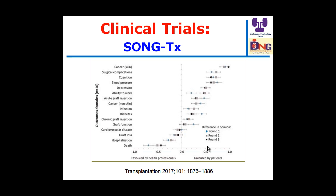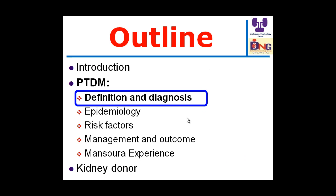This is one of the important points for clinical trials in renal transplantation. These are the most important outcome domains, either from health professionals' perspectives or from patients' perspectives. Development of diabetes after transplantation is one of the important domains from both the patient and doctor side, as patients are interested in the risk of added diabetes after transplantation.